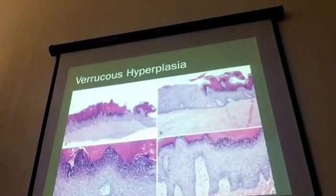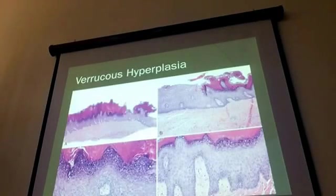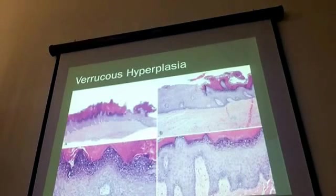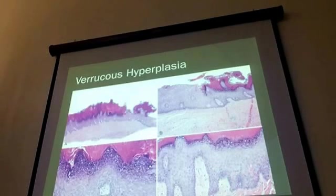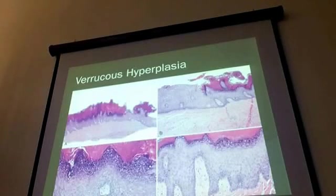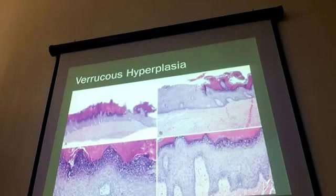When you see verrucous hyperplasia, that also is a marker for possible dysplasia. You can have hypergranulosis with a very thickened, scaly crust. Notice there's really no perikeratosis here. But if you scan around the basal layers, you would see some variation in the nuclei and probably some increased mitotic activity, so you might be inclined to call that a low-grade dysplasia. You should at least be looking for that if you have this kind of pattern.